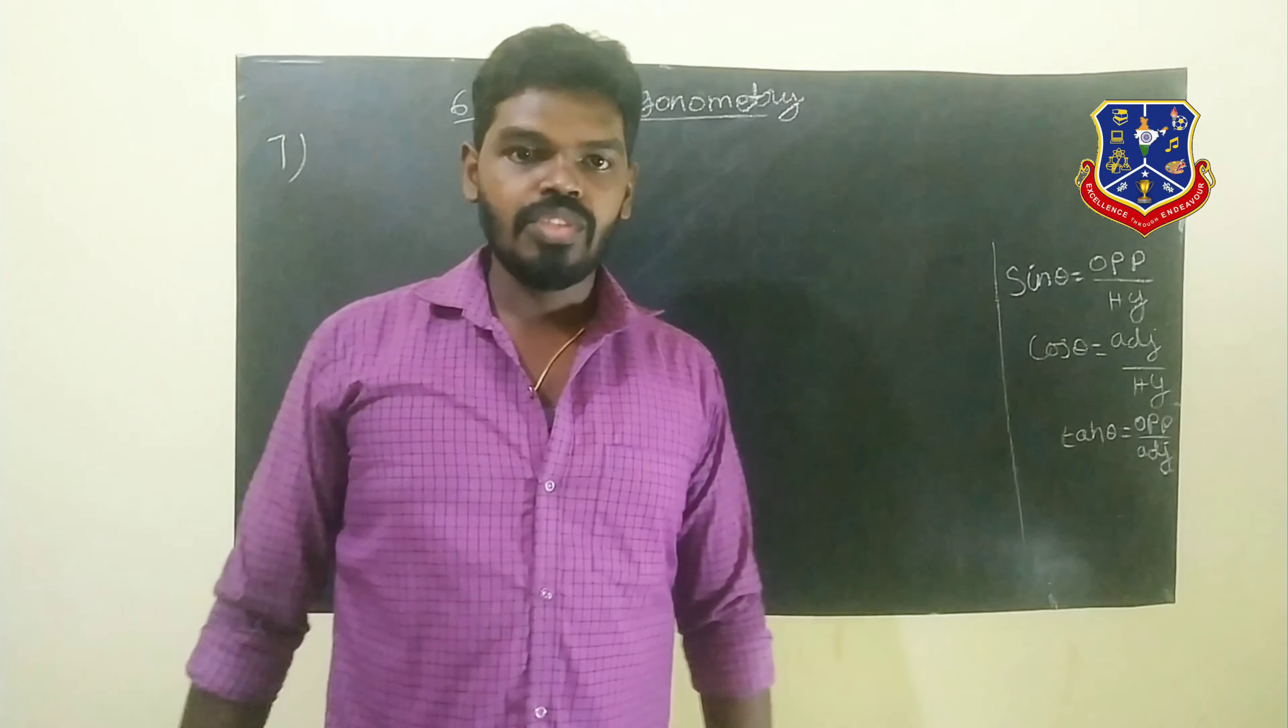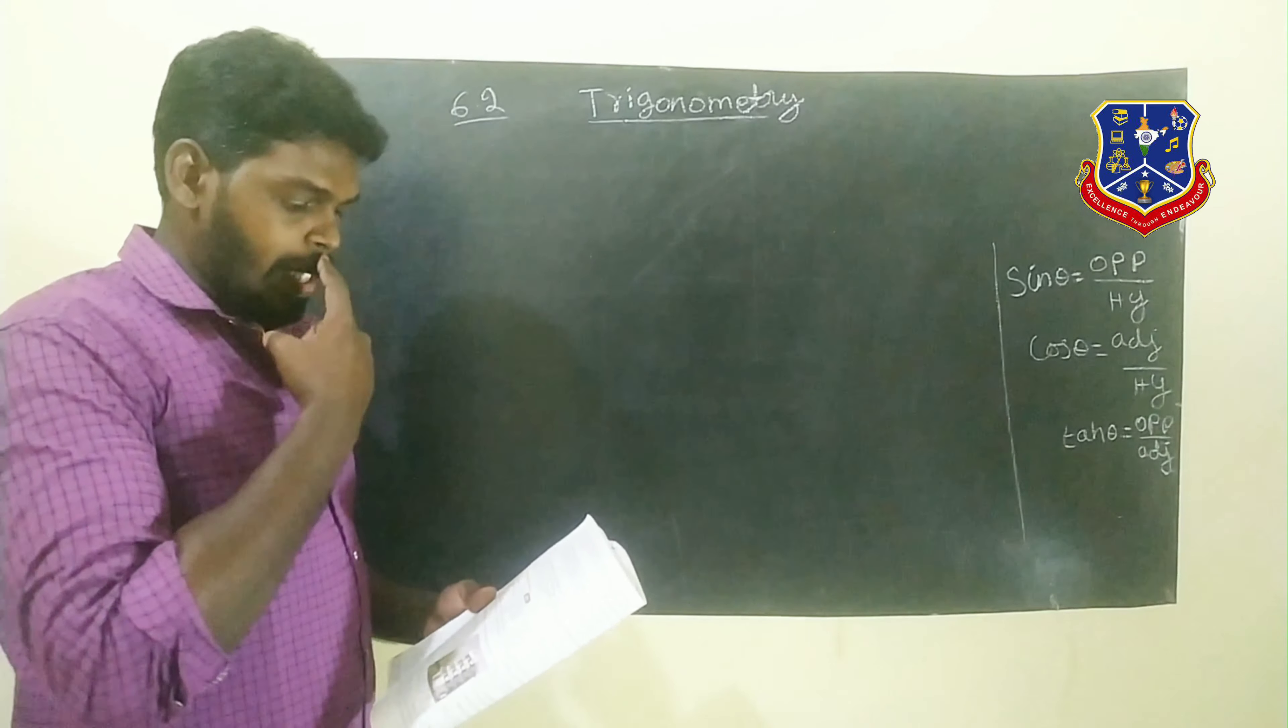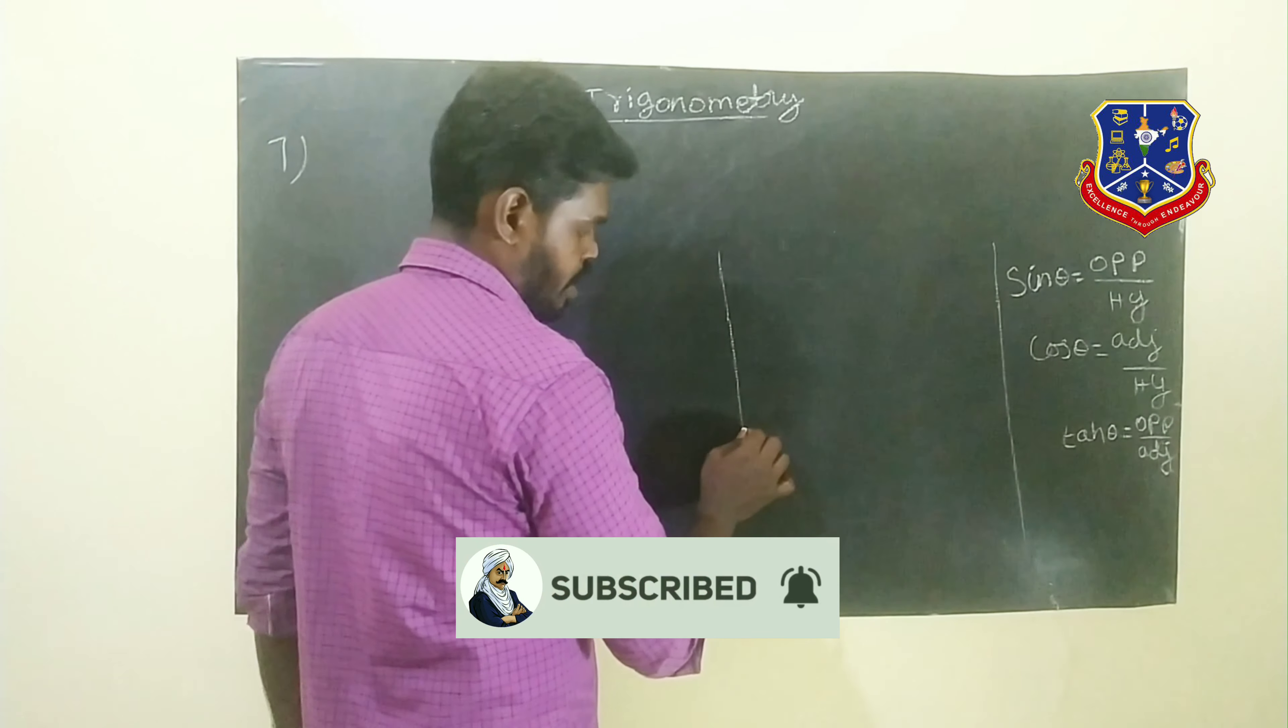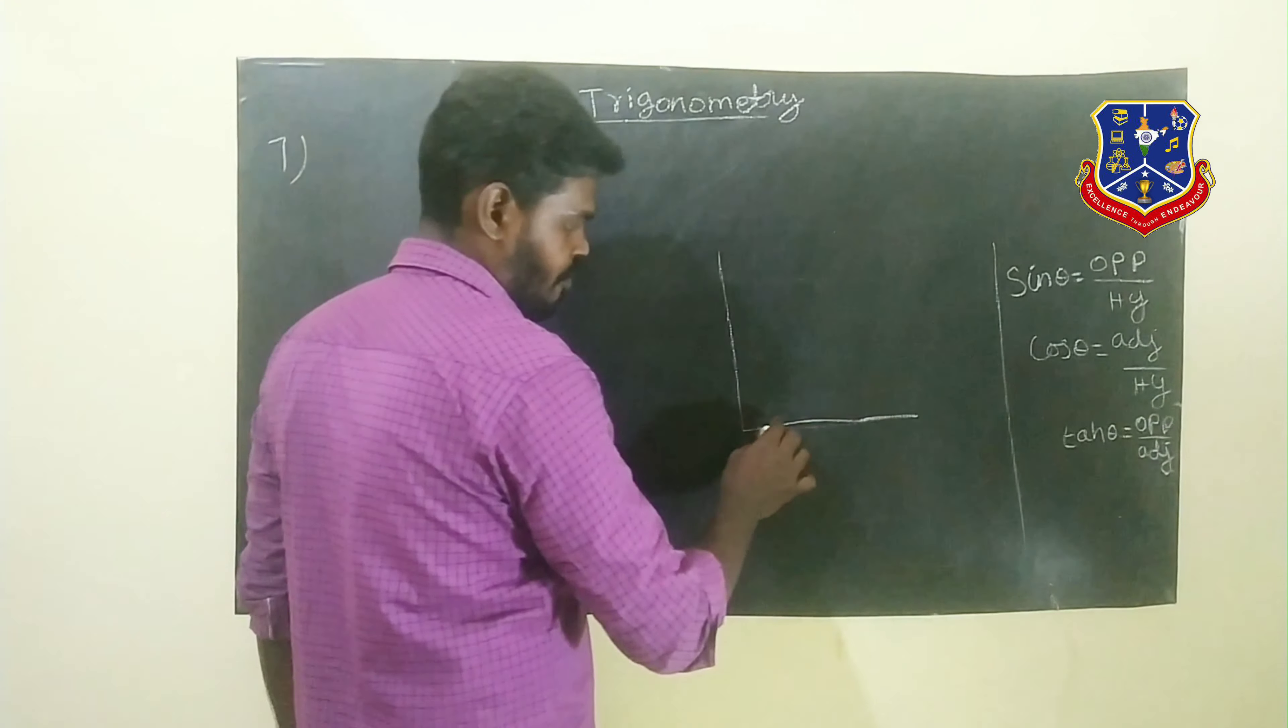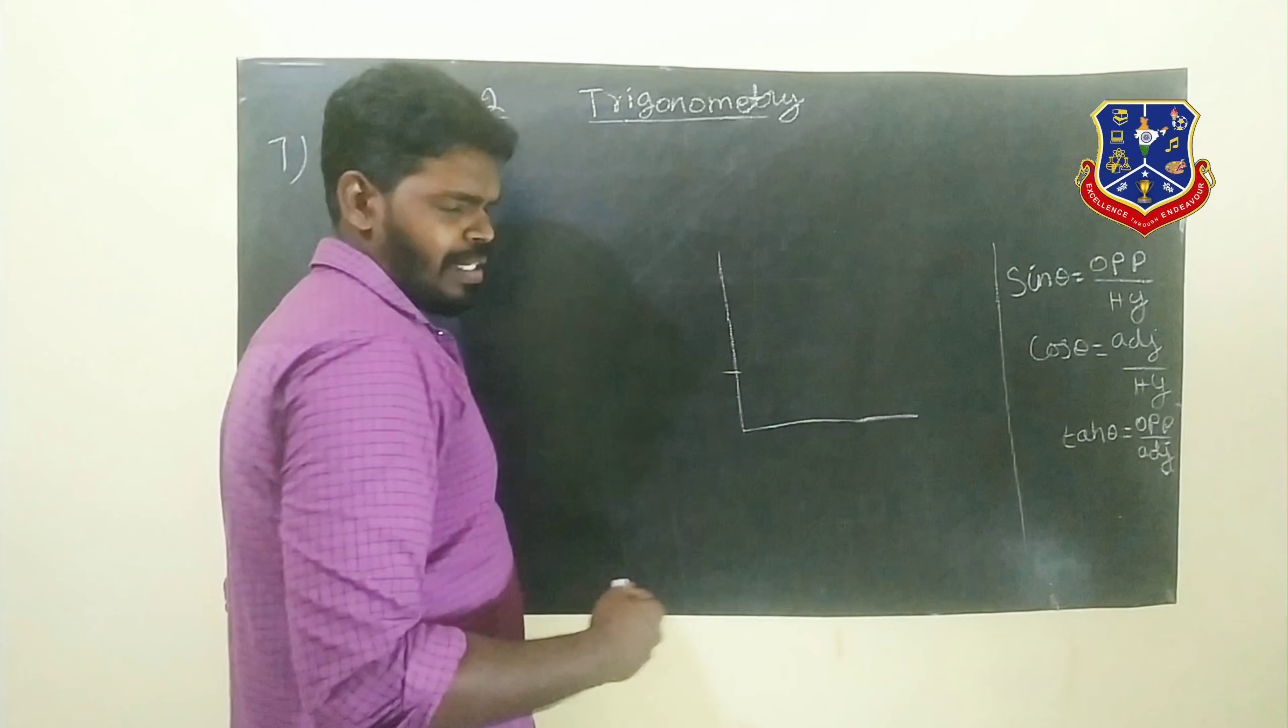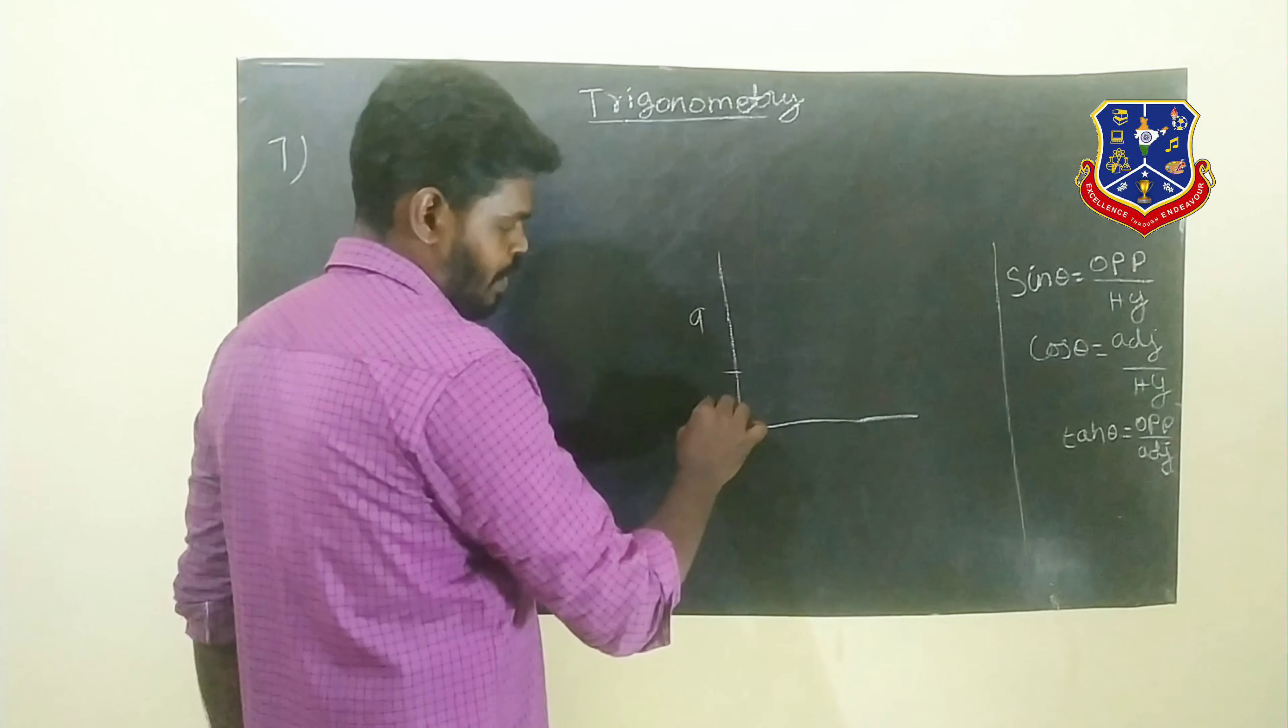Hello students, it is number 6.5. Problem number 7 states that a vertical pole fixed to the ground is divided in the ratio of 9 to 1.